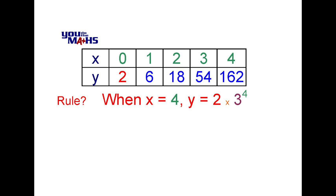If our rule is correct, 162 divided by 54 should be 3. Again if we check that, the result is 3.